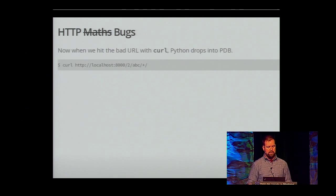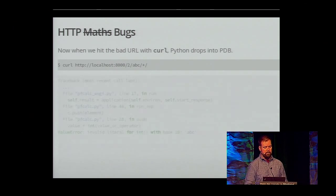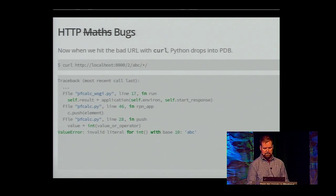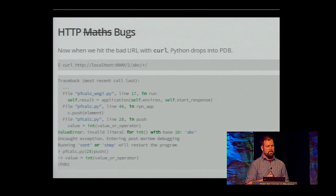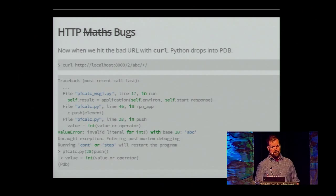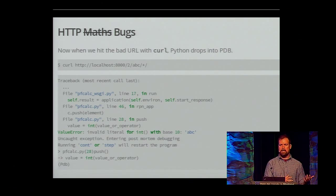When you run it under PDB and execute curl, it's going to give you the traceback because the bug still exists. But then it's going to tell you there's an uncaught exception and enter what's called the post-mortem debugger. This is one of my favorite PDB features — it's what lets you jump back in time to where your program died.